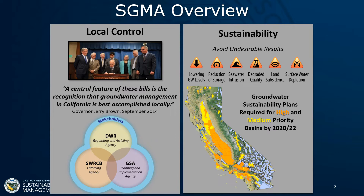SGMA applies to all alluvial groundwater basins in the state as defined by California DWR Bulletin 118. However, the statutory deadlines for reaching sustainability only apply to a subset of groundwater basins prioritized as high or medium priority. Of those, basins designated in Bulletin 118 as being in a condition of critical overdraft were required to submit groundwater sustainability plans by 2020 and become sustainable by 2040, whereas the rest of the high and medium priority basins were required to submit groundwater sustainability plans by 2022 and become sustainable by 2042.